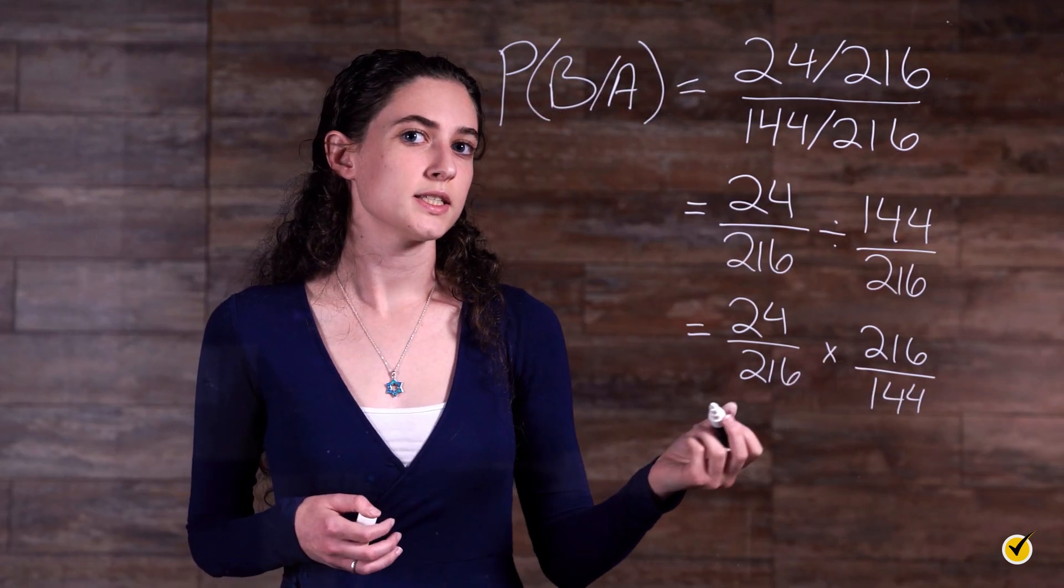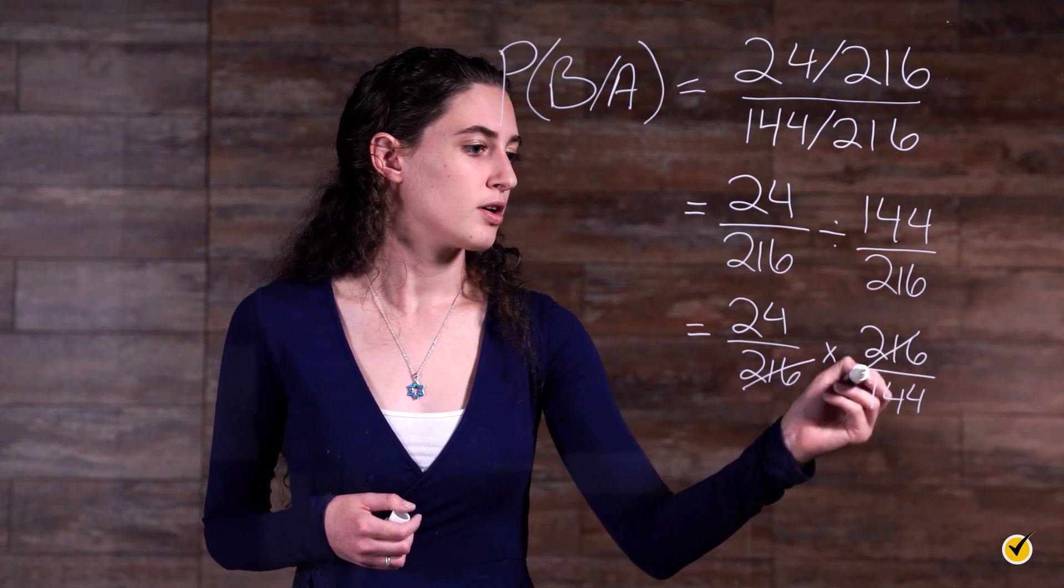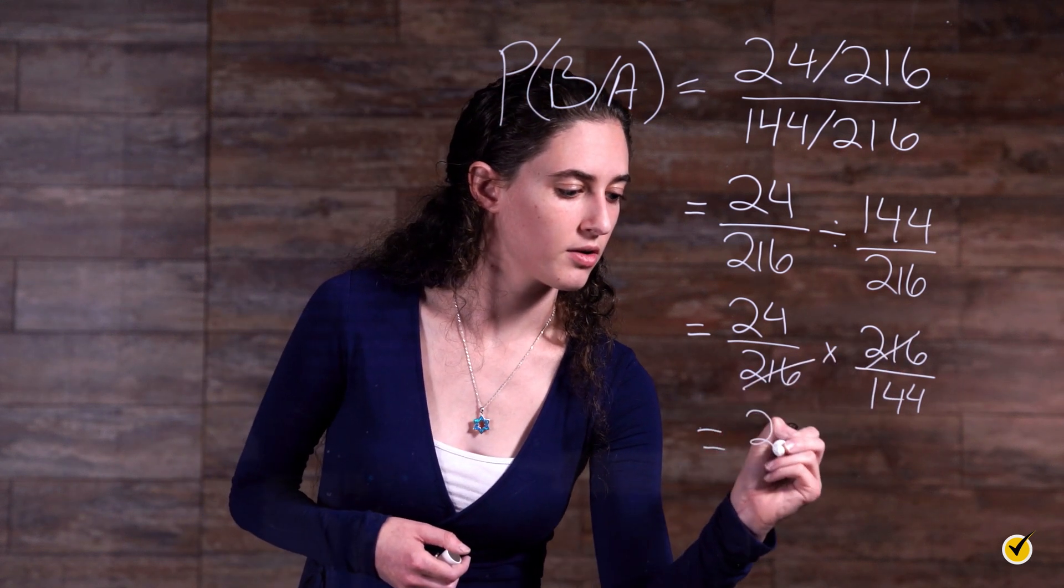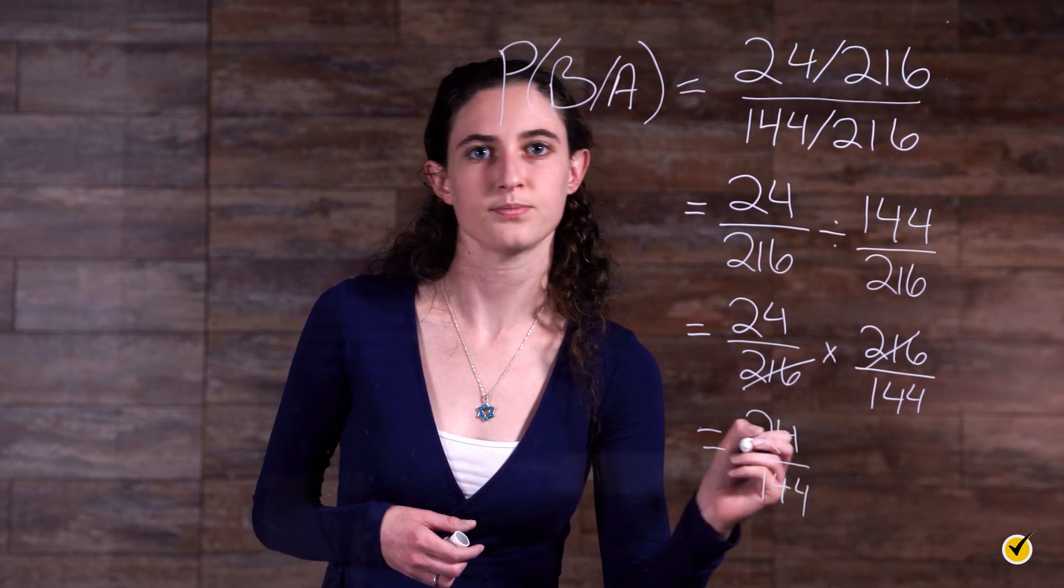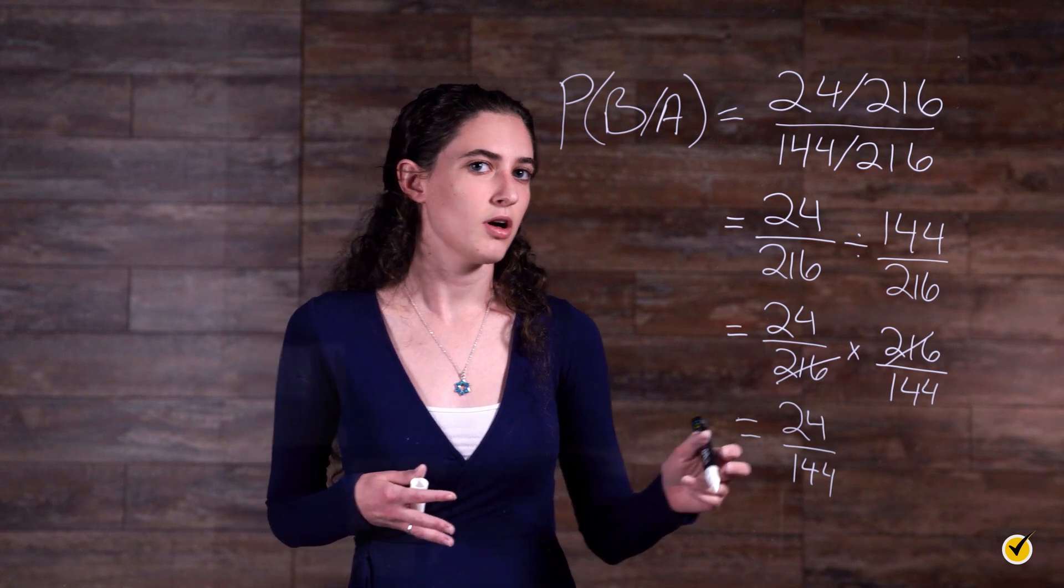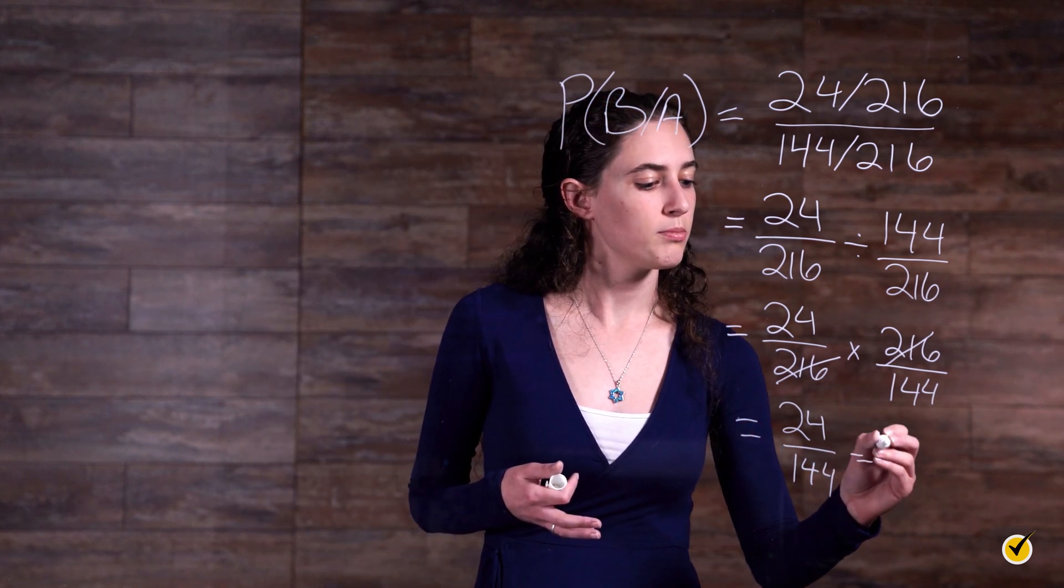The 216 can cross out, so we're left with 24 over 144. We can then divide this to get a decimal of .16666 repeated.